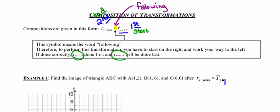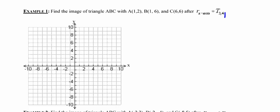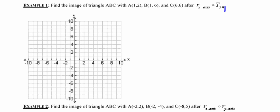Alright, so let's go ahead and jump in and look at some examples here. Number one, it says find the image of triangle ABC with the following coordinates after a reflection in the x-axis, following a translation that moves everybody three units to the right and four units up. So the first thing that I'm going to do is go get a visual of what this triangle looks like that I'm trying to perform this composition on. So I'm going to go ahead and graph triangle ABC.